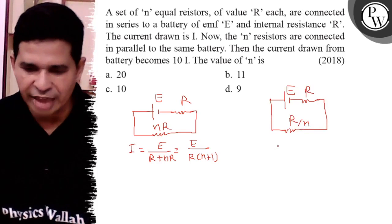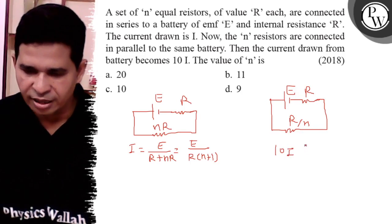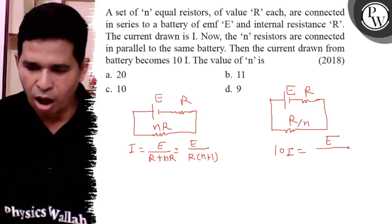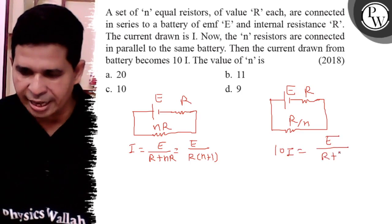So what is the value of 10I? 10I is E upon R plus R by N.